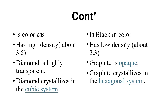Diamond is colorless, while graphite is black in color. Diamond has a high density of about 3.5 grams per centimeter cubed, while graphite has a low density of about 2.3 grams per centimeter cubed. Diamond is highly transparent, while graphite is opaque. Diamond crystallizes in the cubic system, while graphite crystallizes in the hexagonal system.